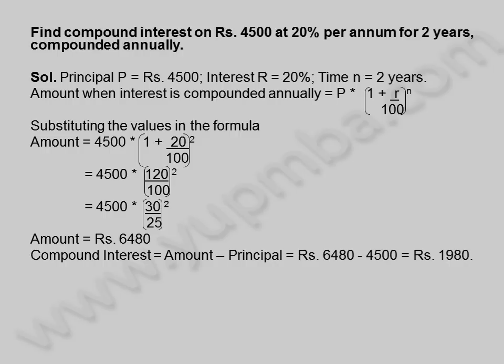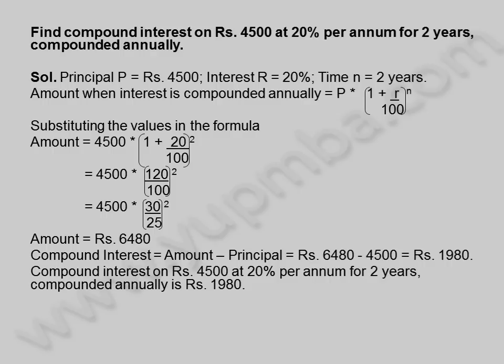Compound interest is equal to amount minus principal is equal to 6,480 rupees minus 4,500 is equal to 1,980 rupees. Compound interest on 4,500 rupees at 20 percentage per annum for 2 years, compounded annually, is 1,980 rupees.